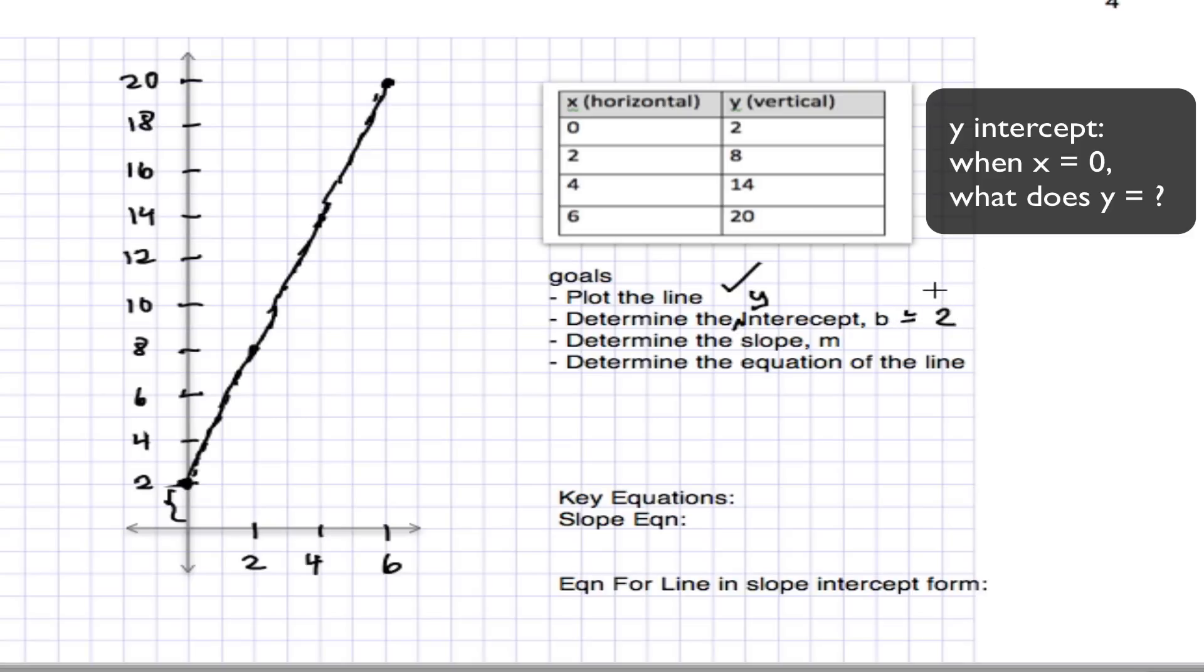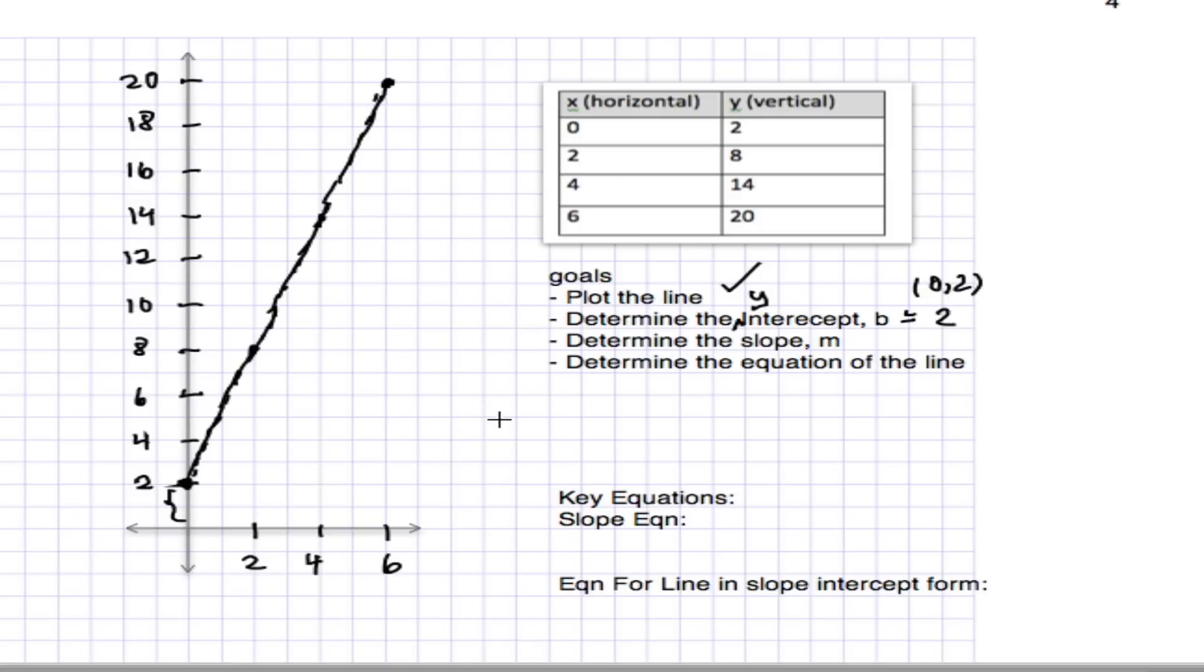If we wanted a coordinate for that intercept, it would be (0, 2). In other words, we want to know the value of y when x equals 0. That's what we mean by the intercept.